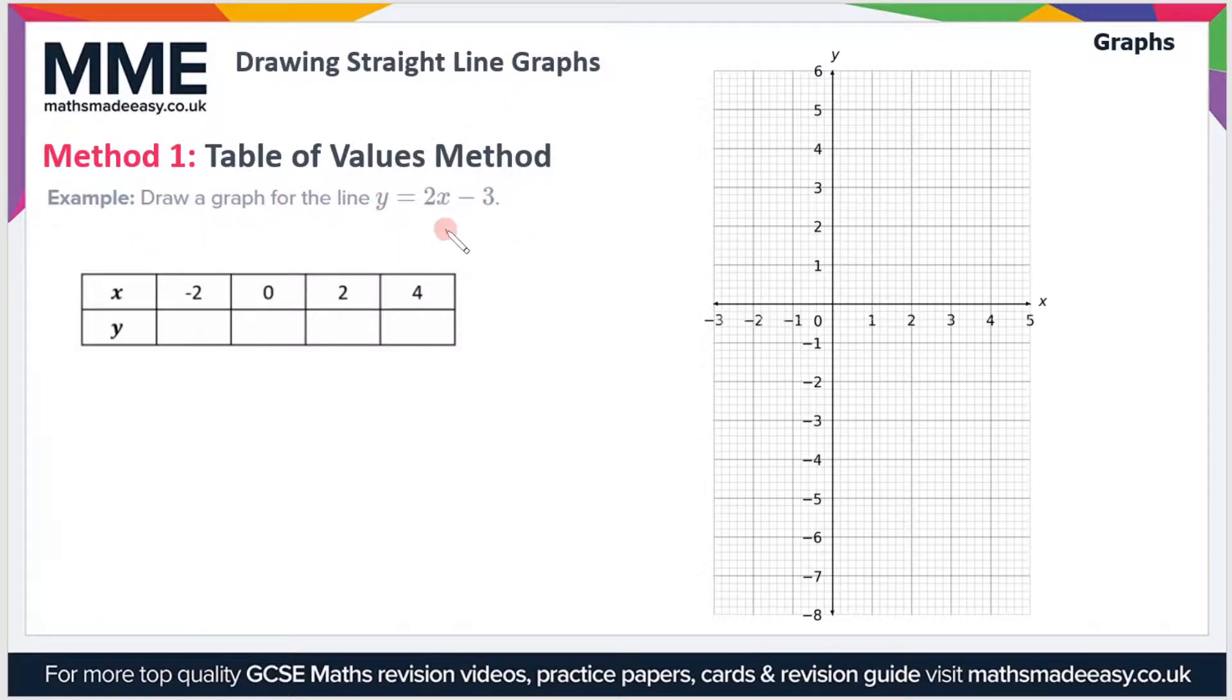In this example we have to draw a graph for the line y equals 2x minus 3. In the table of values method you construct a table of values and you substitute in the x values to work out what the y values are.